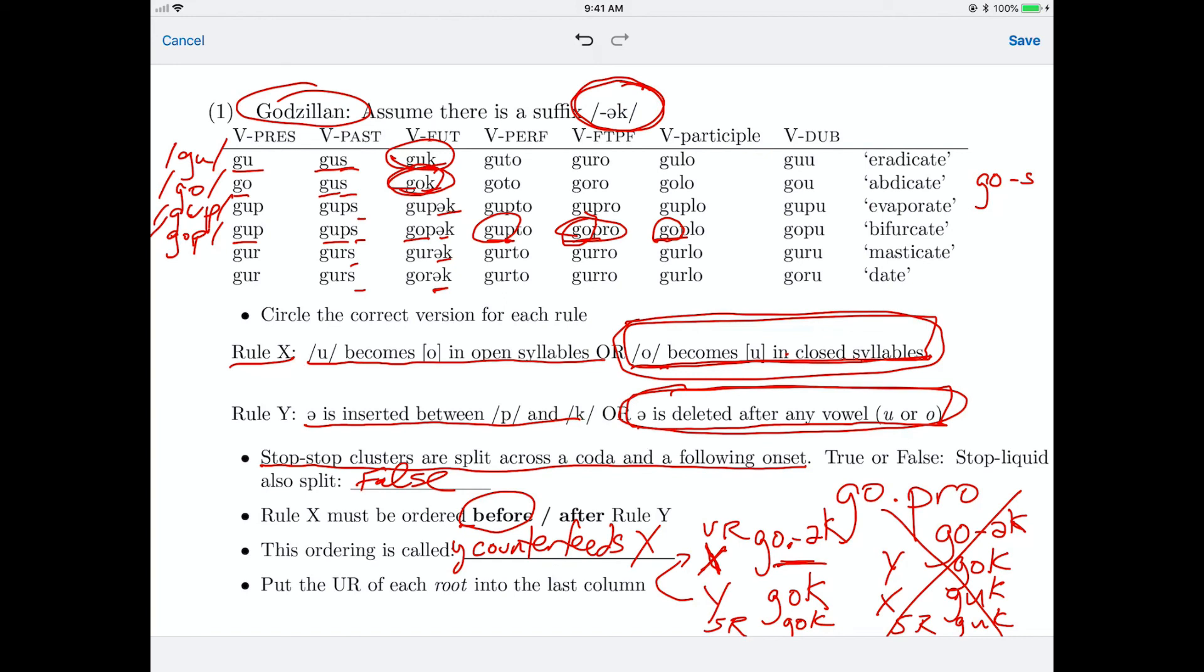Now the underlying forms for each root, I didn't give you a column to write this in, but the first root for eradicate is G-U. The next one is G-O. So the next one is G-O-P. The next one is G-O-P. And then we have G-O-R. Oops, sorry. G-U-R. G-U-R. And G-O-R.